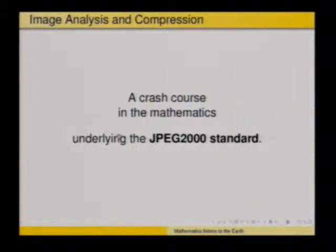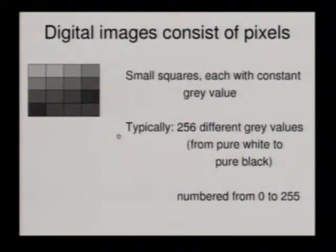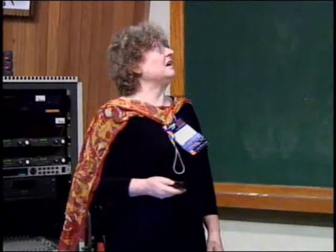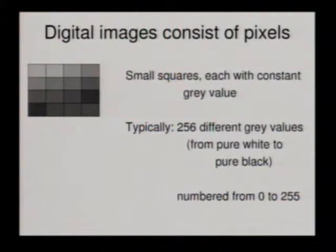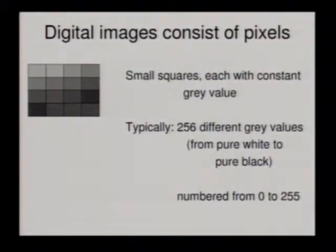Let me start with a little crash course in the mathematics underlying the JPEG 2000 standard. What they use is a mathematical tool called wavelets in order to do image compression. For digital image compression, we start with digitized images. If we think of a black-and-white image, the image consists of small squares — little pixels — that have a gray value indexed from zero for all black to 255 for all white. That is an 8-bit image. You can also have 16-bit images with even more different gray values.